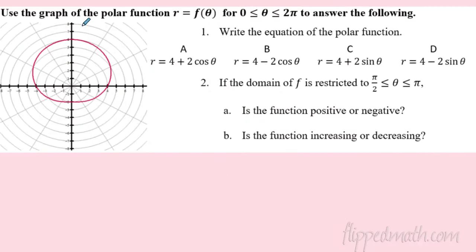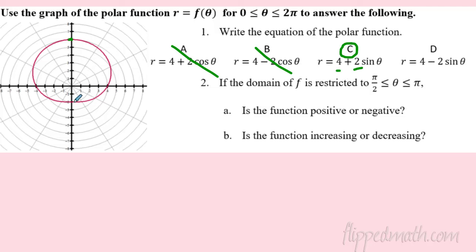Follow-up matching question: given a one-loop limaçon or dimpled cardioid opening upward, we eliminate cosine since it opens up or down, and use positive sine since it opens up. It goes to a maximum of 6, so we need values that add to 6 — like 4 and 2. The dimple is at the difference of 2. So the equation is 4 + 2sin(θ).